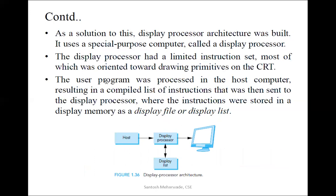The display processor had a limited instruction set, most of which was oriented towards drawing primitives on the CRT — similar to what you study as an instruction set in SS and OS. The display processor consists of a very limited instruction set mainly focused on only drawing the primitives on the CRT; apart from that, it does not do any other thing. The user program was processed in the host computer, resulting in a compiled list of instructions that was then sent to the display processor, where the instructions were stored in a display memory, display file, or display list.